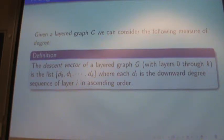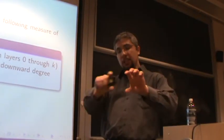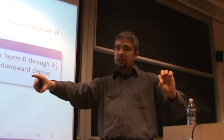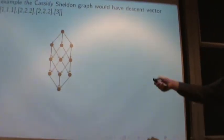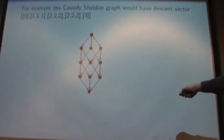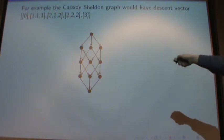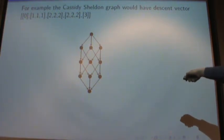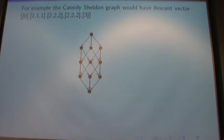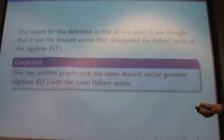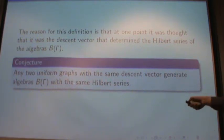Another conjecture that we had involved descent vectors. So one measure of the degree of a layered graph. In order to get the degree of a layered graph, what you can do is you can go level by level and take the downward degree, the number of edges leading out of that vertex. And then for each layer, we're going to take all the vertices, take all the downward degrees, and list them in ascending order. And we're going to do that for each of the layers. So we're going to make a vector of vectors or a list of lists. For example, in the Cassidy-Shelton graph, there's nothing leading out of that. So we get 0. There's 1, 1, and 1. So we get 1, 1, and 1. 2, 2, and 2. So we get 2, 2, and 2. And we make a descent vector, which tells us the number of edges leading out for each level of our layered graph.